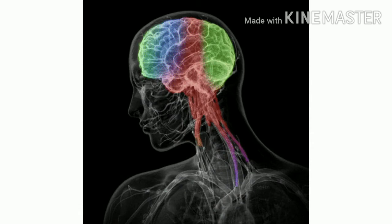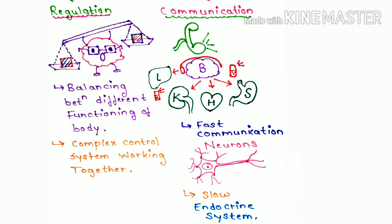Nearly everything we do is with the help of neuron communication. Another type of communication is via endocrine system, which is comparatively slow.